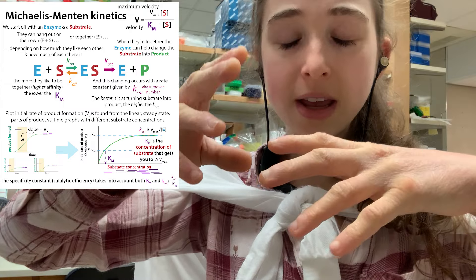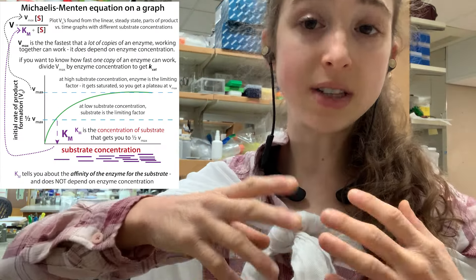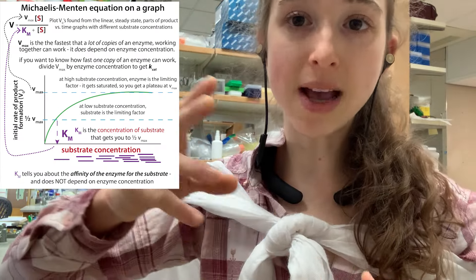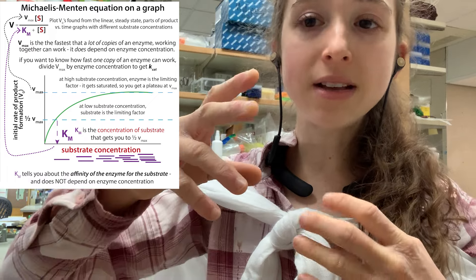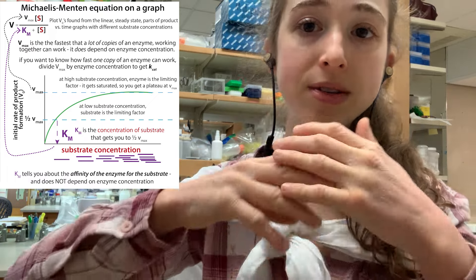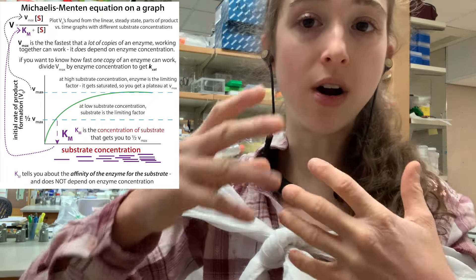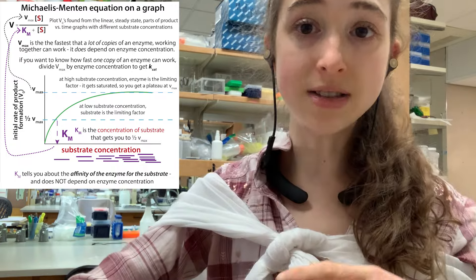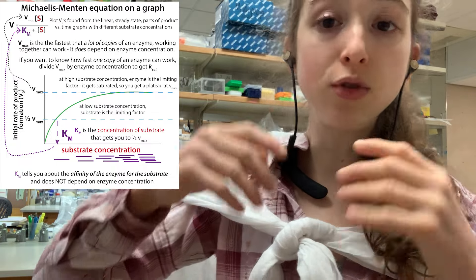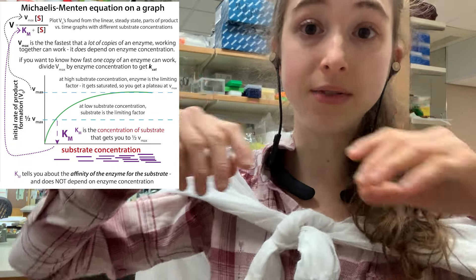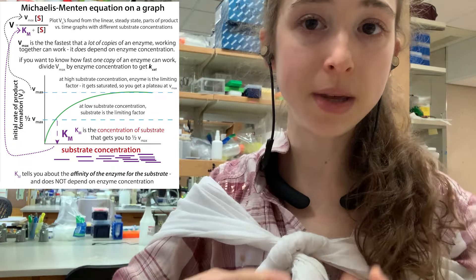We take the amount of product formed and look at the time to get the Vmax — this maximum velocity. If we divide that by the number of snappers, we get our Kcat, our turnover number — the speed at which a single enzyme copy is working.